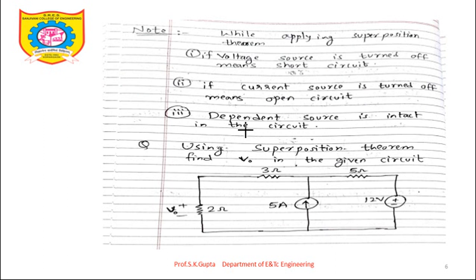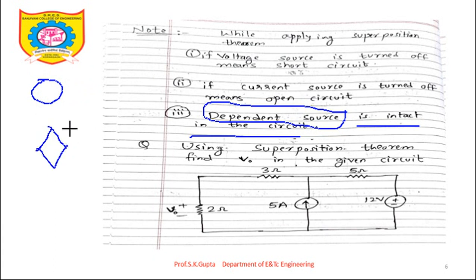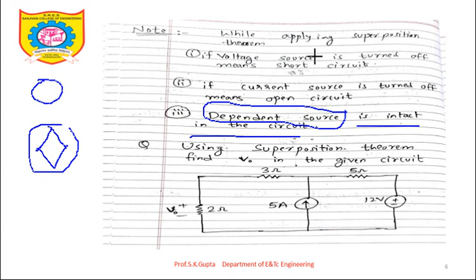If there are any dependent sources in the circuit, the dependent source is kept intact — we will not make it a short circuit or open circuit. As you know, independent sources are represented by a circle and dependent sources by a diamond shape. So any dependent voltage or current source is kept as-is and is never replaced by a short circuit or open circuit while using the superposition theorem.